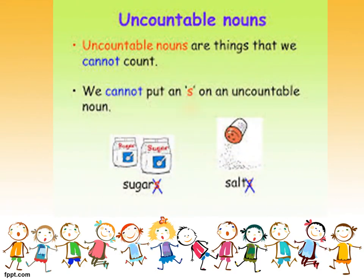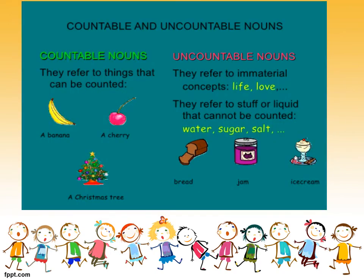Uncountable nouns are things that we cannot count. We cannot put an S on uncountable nouns — we cannot say 'sugars' or 'salts.' Uncountable nouns cannot take a number before them — saying 'one water' or 'one sugar' sounds very strange. Please remember the concepts of countable and uncountable nouns.